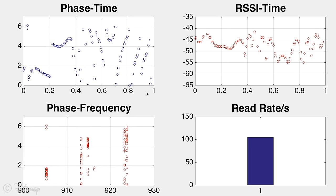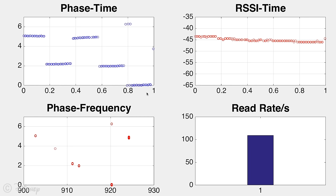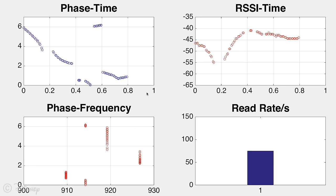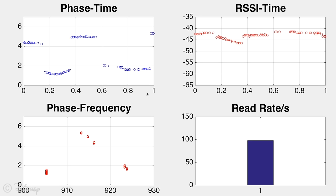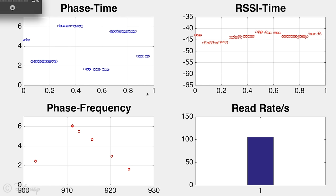RFID readers are capable of reporting low-level channel parameters such as received signal strength, RF phase, channel number, and Doppler shift. These parameters represent a unique snapshot of the RF environment of individual RFID tags.